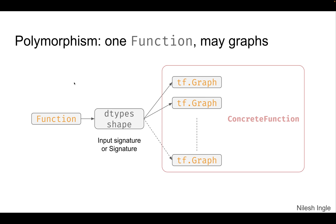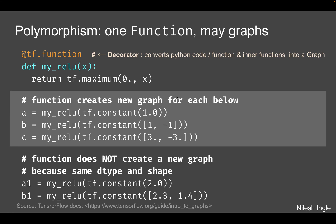Now let's look at polymorphism — one function, many graphs. The idea is that when we create a function in Python, a graph is created depending on the data type and shape of the input. For example, if the input is an integer rank-one tensor and the second input is an integer rank-two tensor, because the shapes are different — that is, the input signatures are different — it will create a new graph. All these graphs are stored within the concrete function in TensorFlow.